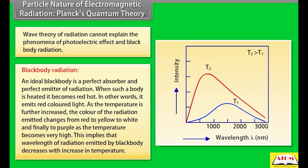At a given temperature, the intensity of radiation emitted increases with decrease of wavelength, reaches a maximum value at a given wavelength, and then starts decreasing with further decrease of wavelength.